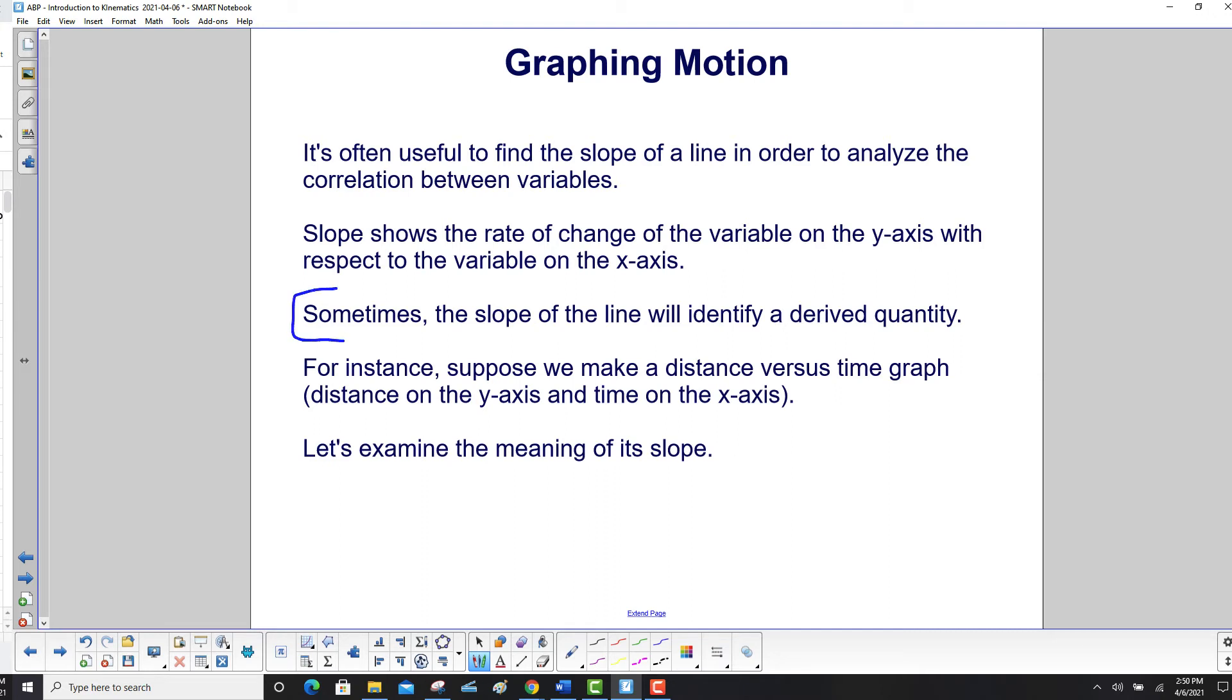Sometimes, the slope of the line will identify a derived quantity. For instance, suppose we make a distance versus time graph, distance on the y-axis and time on the x-axis. Whenever you have this, the first guy is typically the y-axis and the second quantity will be the x-axis. Let's examine the meaning of its slope.